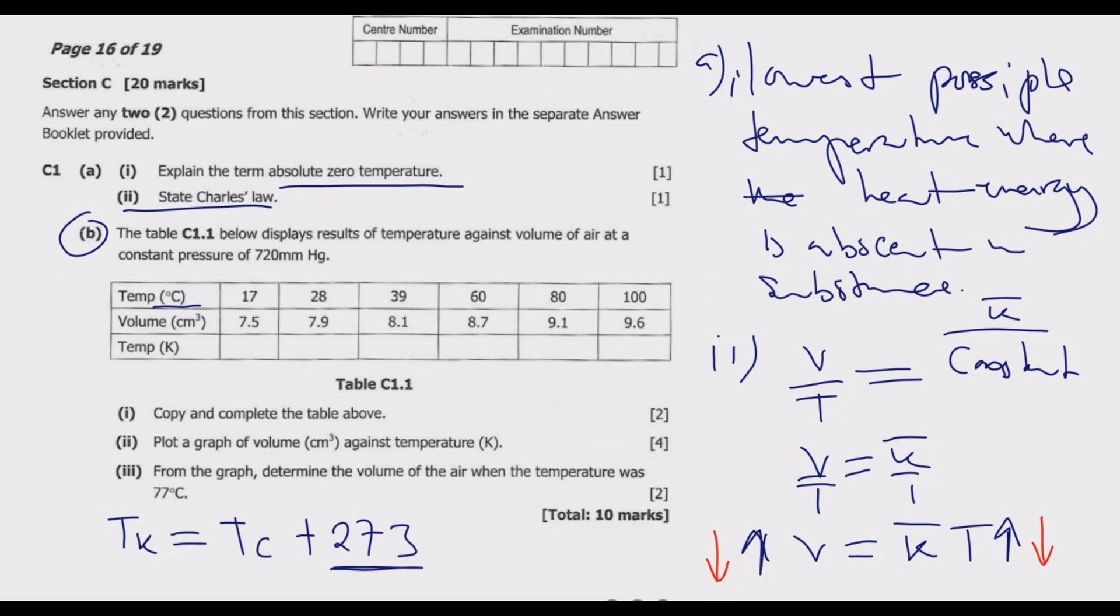So we have been given temperature in degrees. To every value, we are going to add 273 to convert it to Kelvins. So 17 plus 273, we end up with 290. Then we have 28 plus 273, we end up with 301. Next, 39 plus 273, we end up with 312. Then 60 gives us 333. Then 80 gives us 353. Then when it's 100, it's going to be 373. Once you do that, you get the marks.